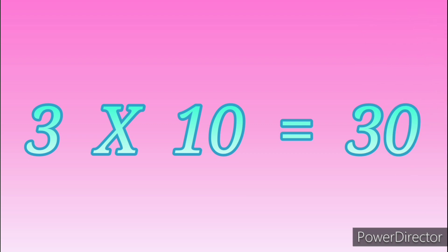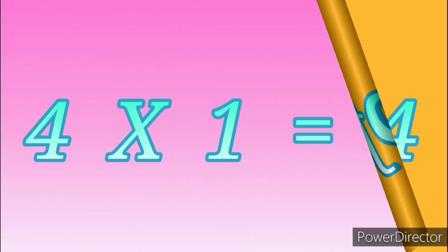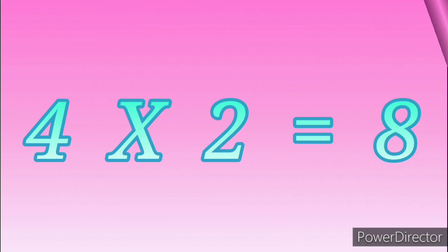3 tens are 30. Table of Four. 4 ones are 4, 4 twos are 8.